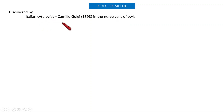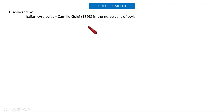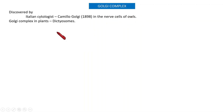Good morning dear students. Today we are going to learn about another cellular organelle — the Golgi complex. It was discovered by an Italian cytologist named Camillo Golgi in 1898, who isolated the Golgi complex for the first time from the nerve cells of owls.